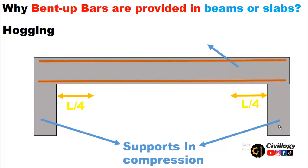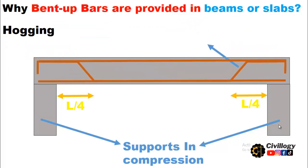Top reinforcement is provided to keep shear reinforcement intact. Shear reinforcement is provided in the form of stirrups, which take up about 50% of the shear force. The remaining half portion is borne by crank bars, which are bent up at an angle of 45 degrees. The bent is made at a distance of L/4 near the supports, which is the shear zone and experiences maximum shear force. That is why it is recommended that stirrups should be closely spaced in this portion of the beam.